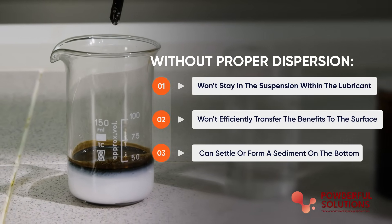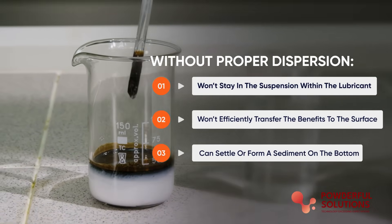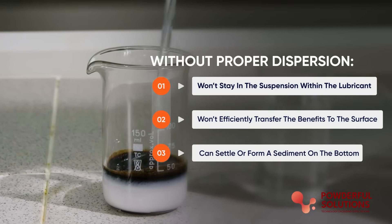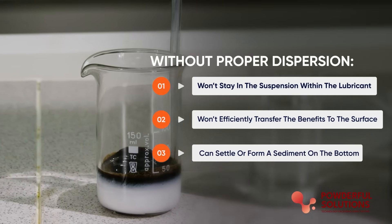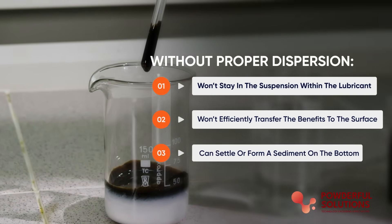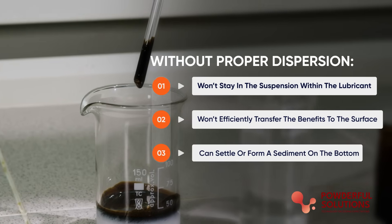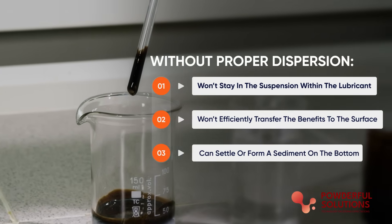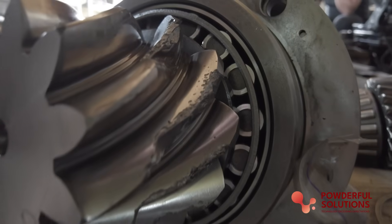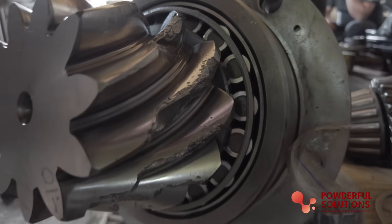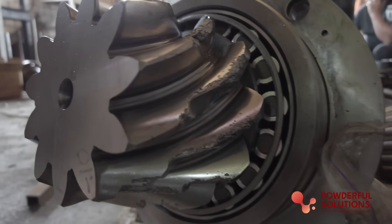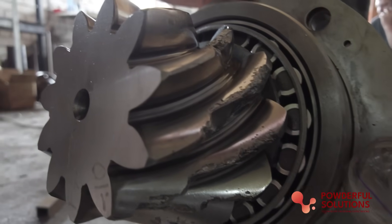They won't stay in suspension within the lubricant and they won't efficiently transfer the benefits to the metal surfaces. Unstable powders can settle or form sediment at the bottom of the container, rendering them ineffective and potentially damaging the machinery they're supposed to protect.